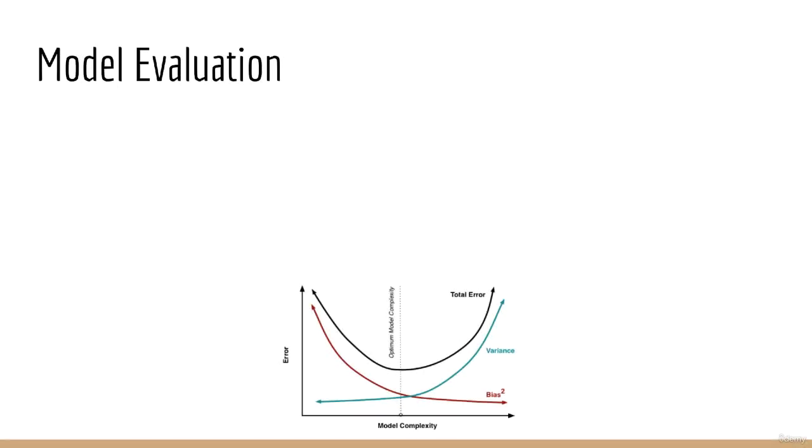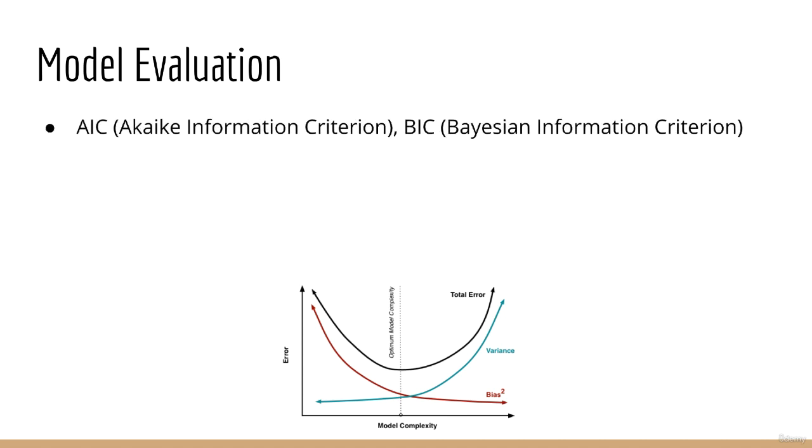Alright so when we run auto ARIMA, it's going to use some criterion to evaluate each model. The model that gives us the best value will be the model chosen. Two sort of equally good evaluation criteria are the AIC and the BIC. AIC stands for Akaike Information Criterion and BIC stands for Bayesian Information Criterion. The intuition behind both of these is the same.